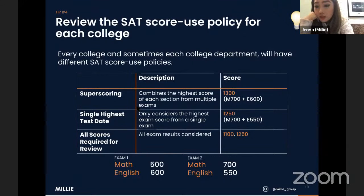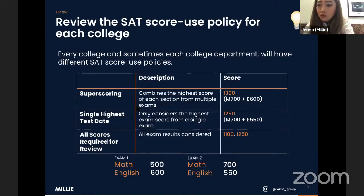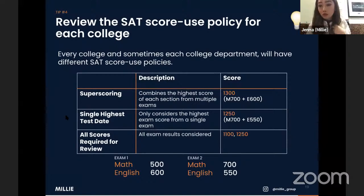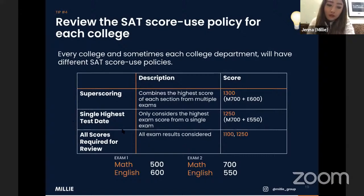The next question we get is: does super scoring only apply to lower-tier schools? The answer is no. Princeton does super scoring. Columbia does super scoring. Cornell does super scoring. Majority of schools do super scoring — I mention Ivy League schools just to show it's not only mediocre schools doing this. The second most popular policy is single highest test date score, where you just look at one test date. Some schools, however — an example is Stanford — require all scores for review, but very few schools do this.